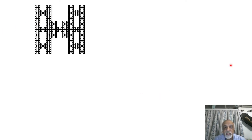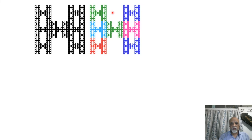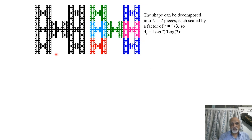Looking at another object: you count the self-similar pieces and find 7 such parts, color-coded into seven different regions. The scaling factor is 1/3 — each piece is one-third of the original size. So the similarity dimension is log 7 / log 3.